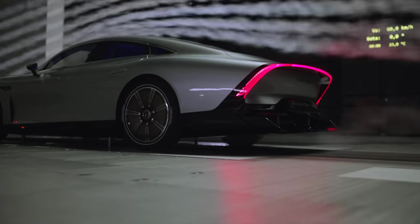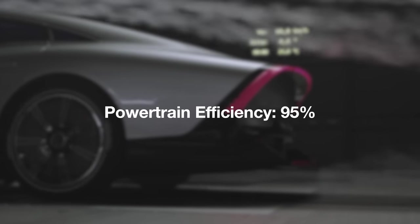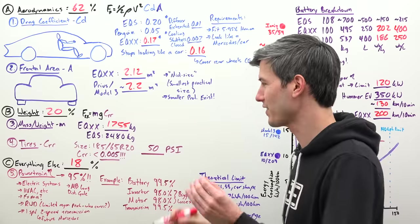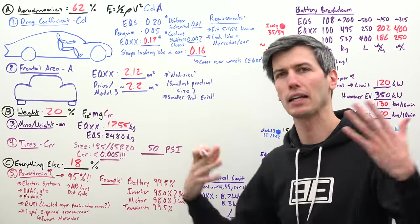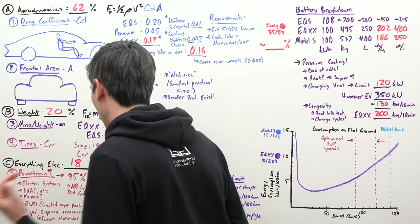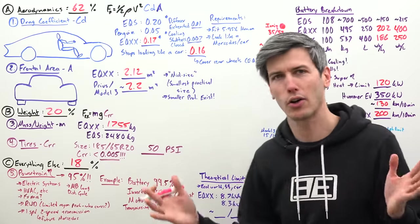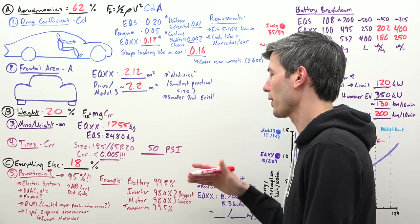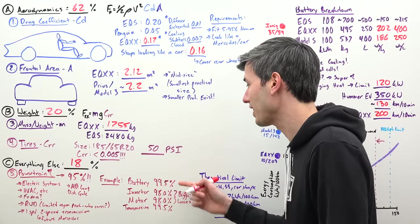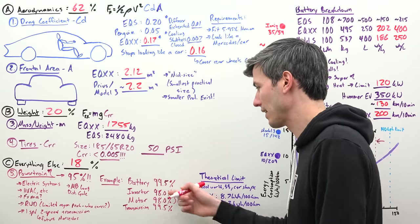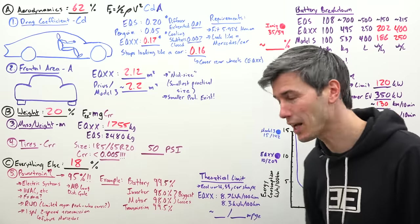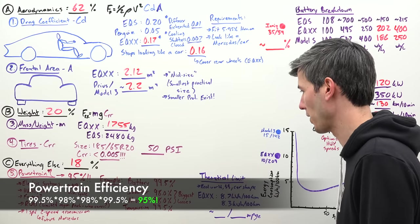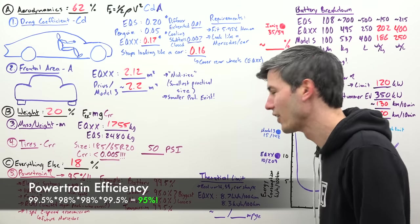A super impressive number relating to this EQXX is the powertrain efficiency of 95 percent. This is not a peak, not a single point where we can achieve 95 percent. This is over their internal long distance driving cycle, basically a highway driving cycle, they can achieve 95 percent powertrain efficiency. To illustrate how crazy this is, and there are other cars out there that can do this, this has been achieved in Formula E but those are race cars, this is trying to be a road car. If you look at a battery that can discharge with an efficiency of 99.5, an inverter with 98 percent efficiency, then through a motor with 98 percent efficiency, then through a transmission with 99.5 percent efficiency, in this case just one gear but you're going to have losses through that gear regardless, if you multiply all these together you get 95 percent efficiency.